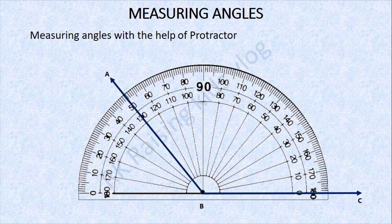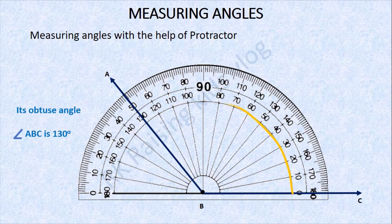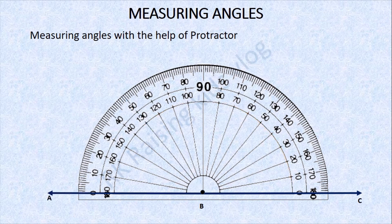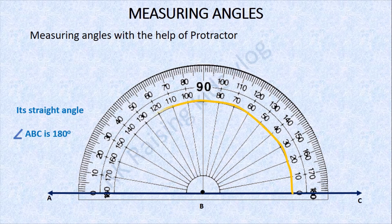Next: what kind of angle is this and how much degrees is it measuring? The angle ABC is 130 degrees — it's an obtuse angle. Next: what kind of angle is this and how much is it measuring? It is a straight angle. The angle ABC is 180 degrees. This is how we measure or draw angles.